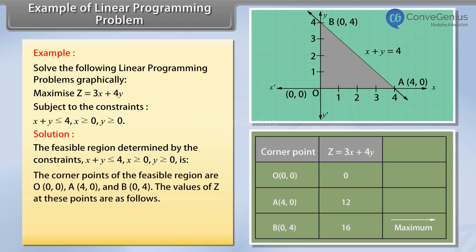The corner points of the feasible region are O(0, 0), A(4, 0), and B(0, 4). The values of Z at these points are as follows.